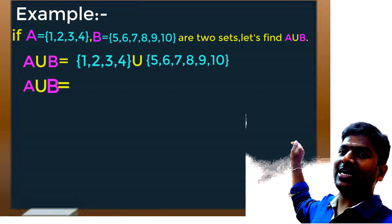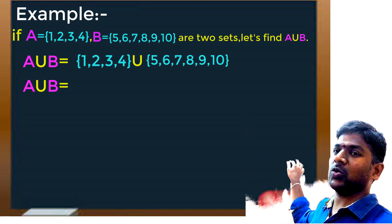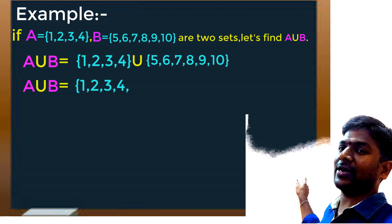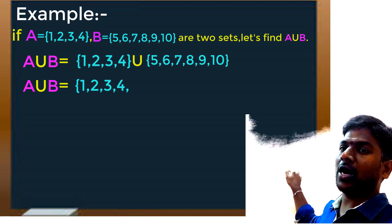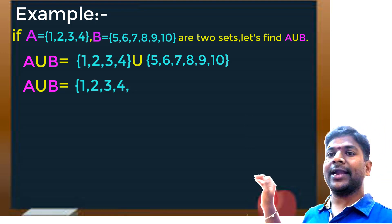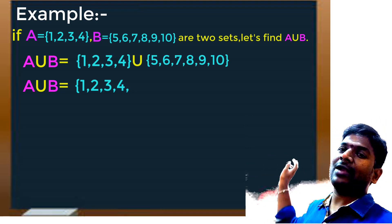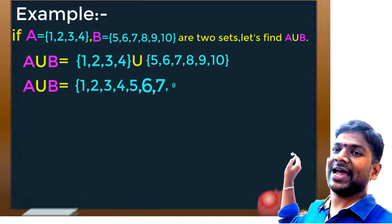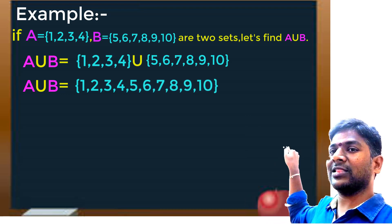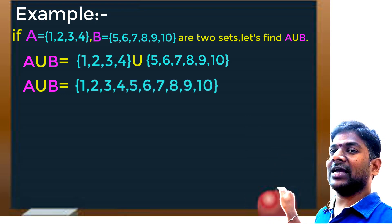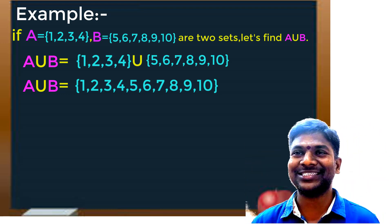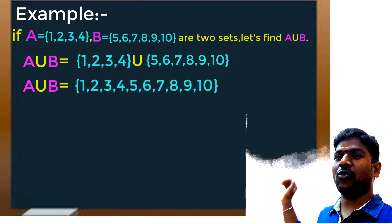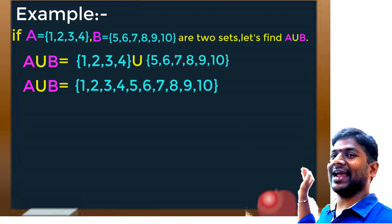First we take the elements of set A: 1, 2, 3, 4. Then we write the elements of set B: 5, 6, 7, 8, 9, 10. So A∪B = {1, 2, 3, 4, 5, 6, 7, 8, 9, 10}. N(A) = 4, N(B) = 6, and N(A∪B) = 10.